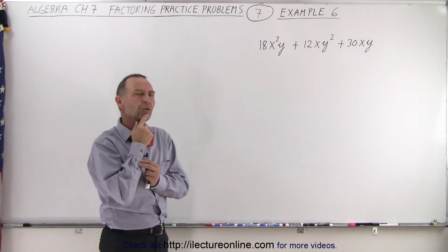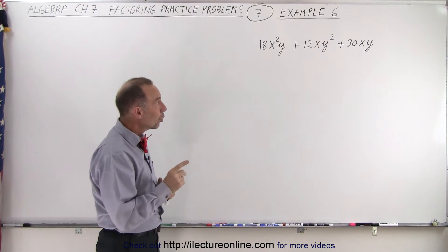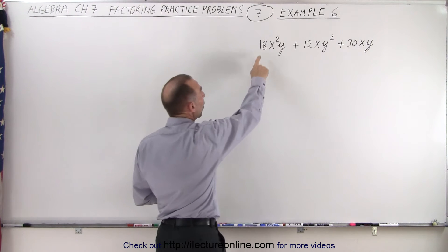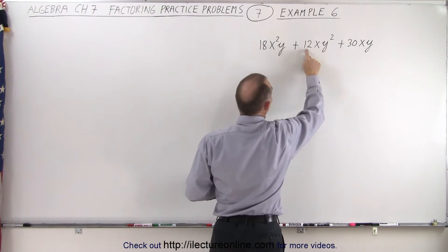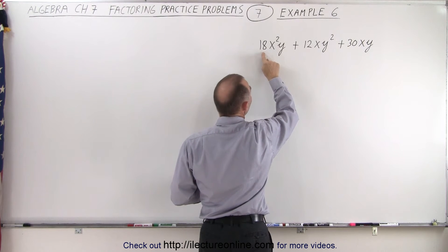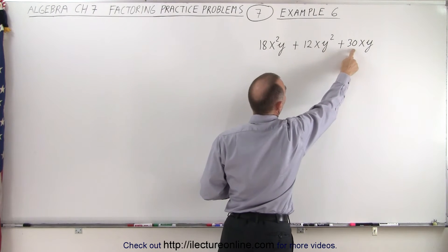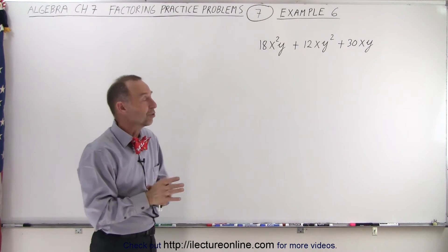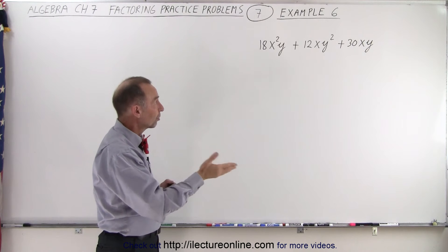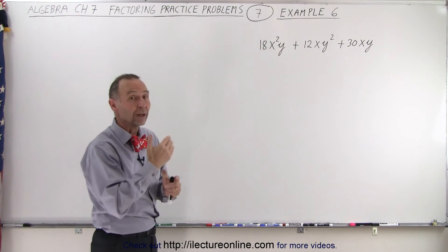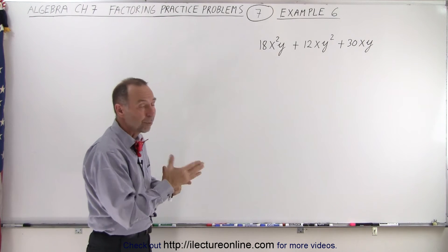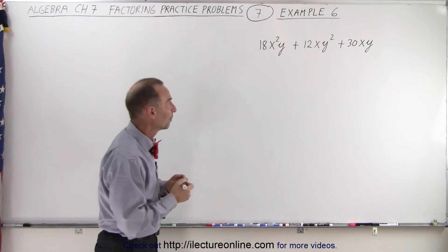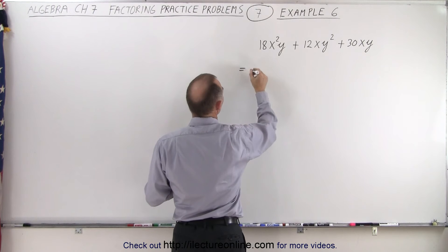But what about the numerical coefficients? Notice that if you sum up all the numbers, 1 plus 8 is 9, 1 plus 2 is 3, and 3 plus 0 is 3. That sum, they're all divisible by 3, which means all the numbers are divisible by 2. They're also divisible by 3, which means they're divisible by 6. We can factor out a 6 as well.